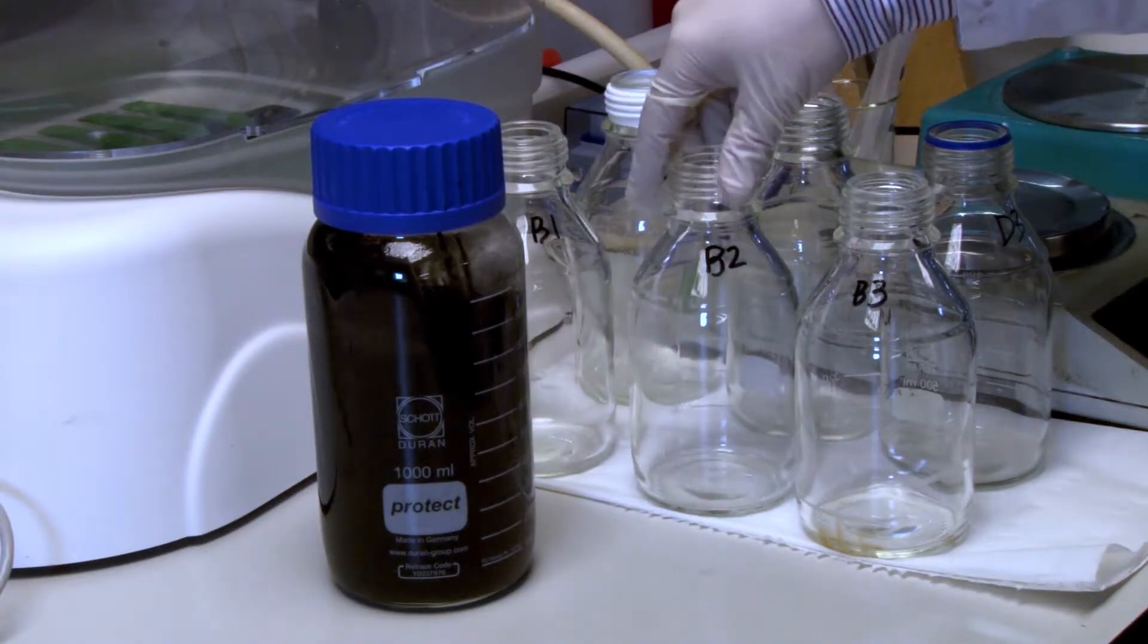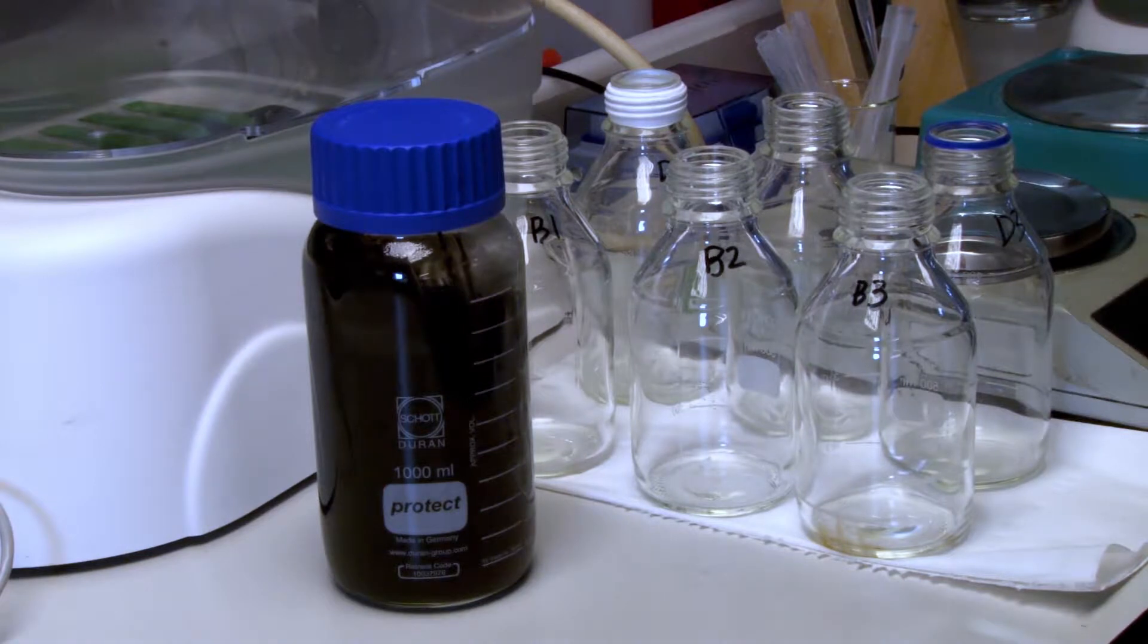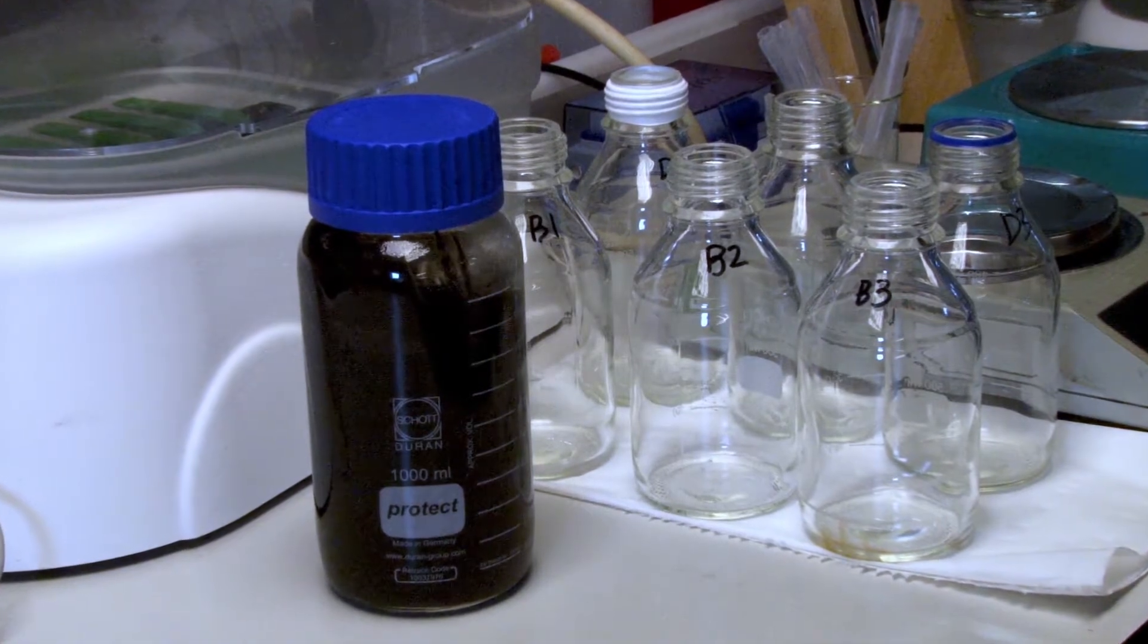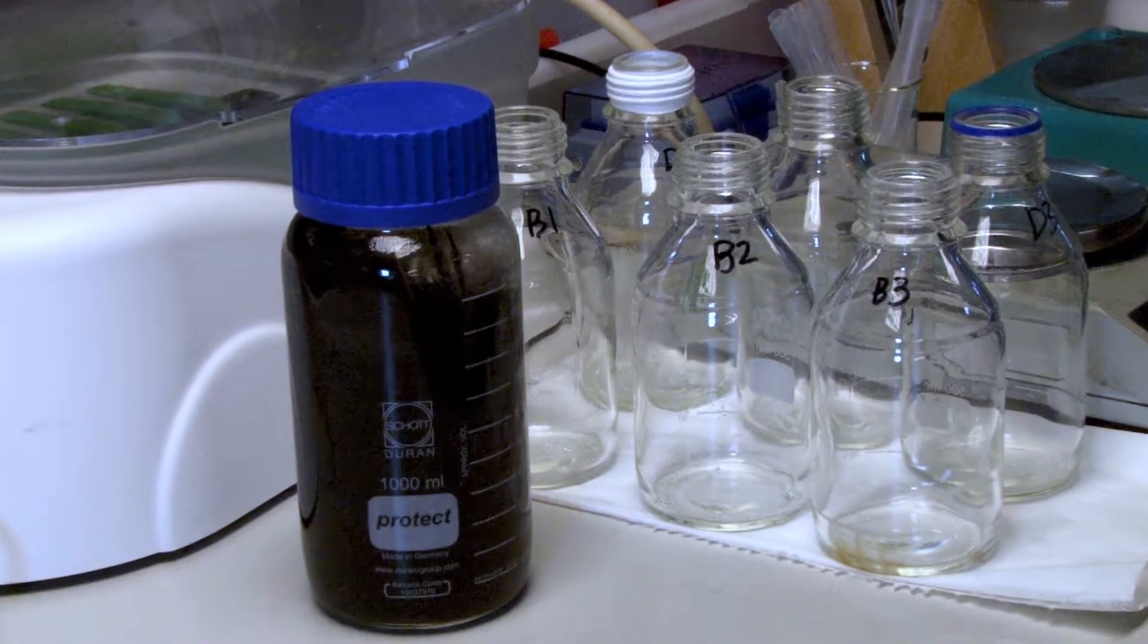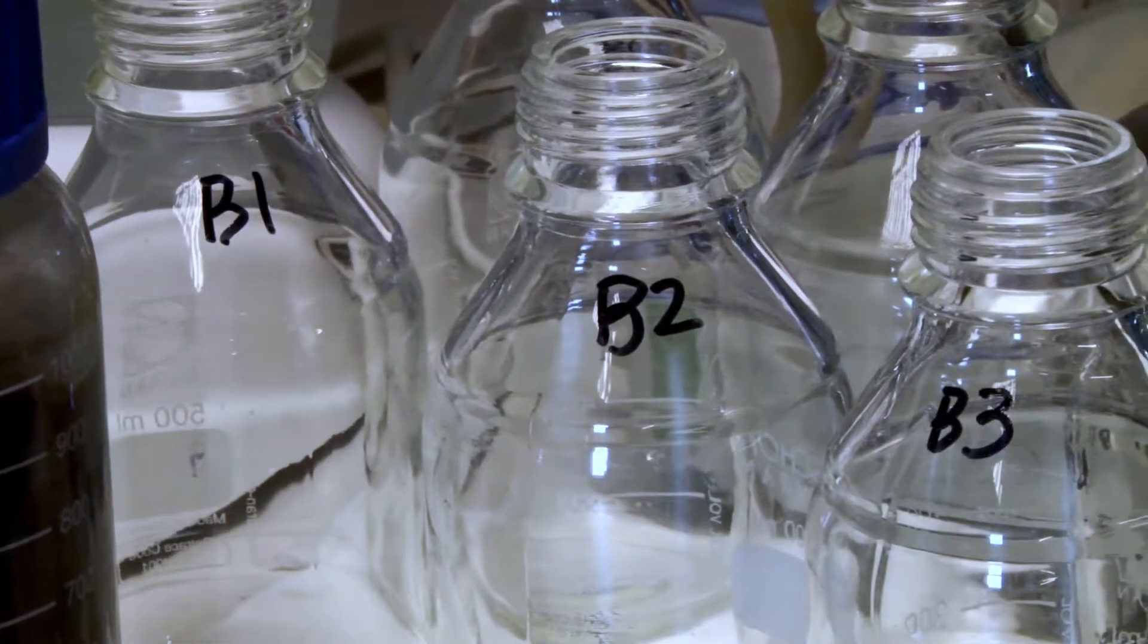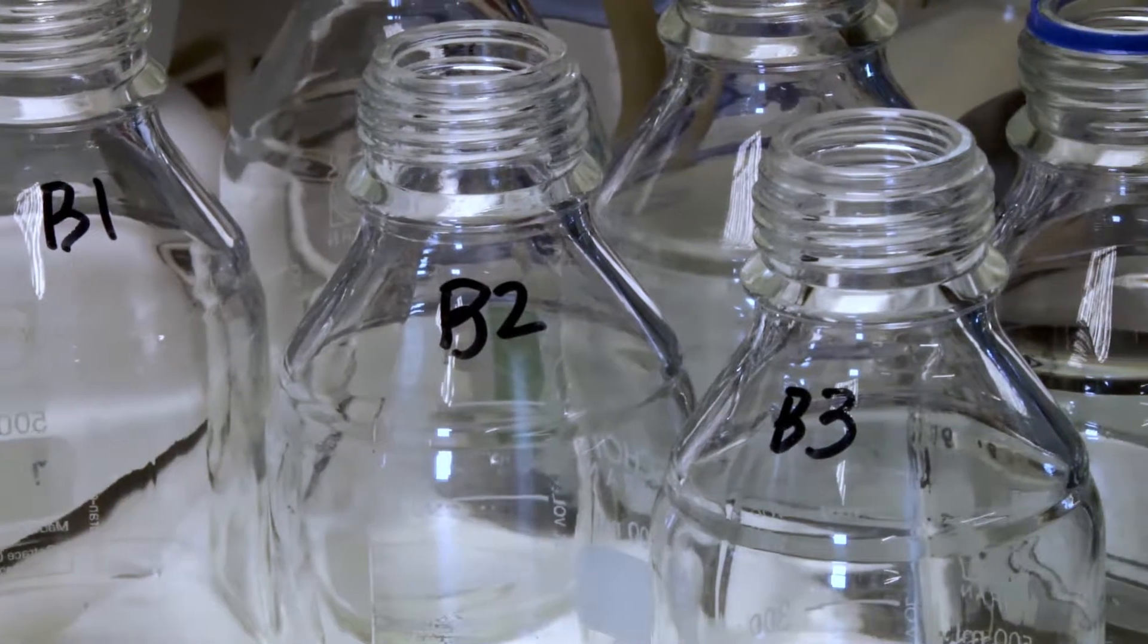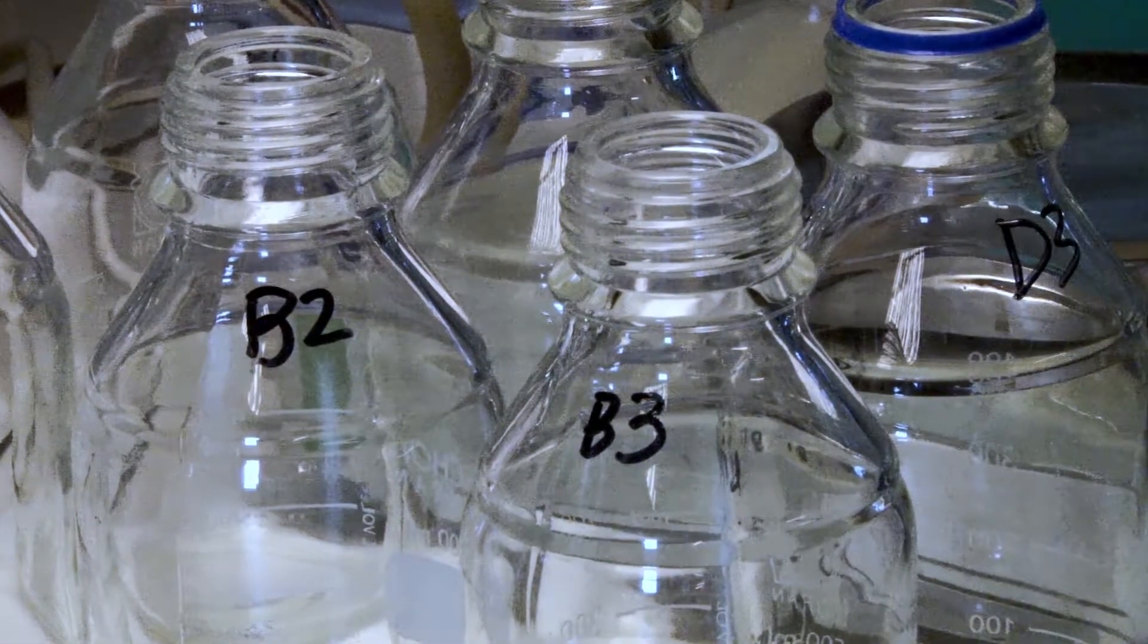The SMA test is usually carried out in triplicate. First, mark all the bottles properly: three blanks and three samples. The blanks contain the inoculum and media without the addition of sodium acetate. The samples contain the sludge and substrate solution.